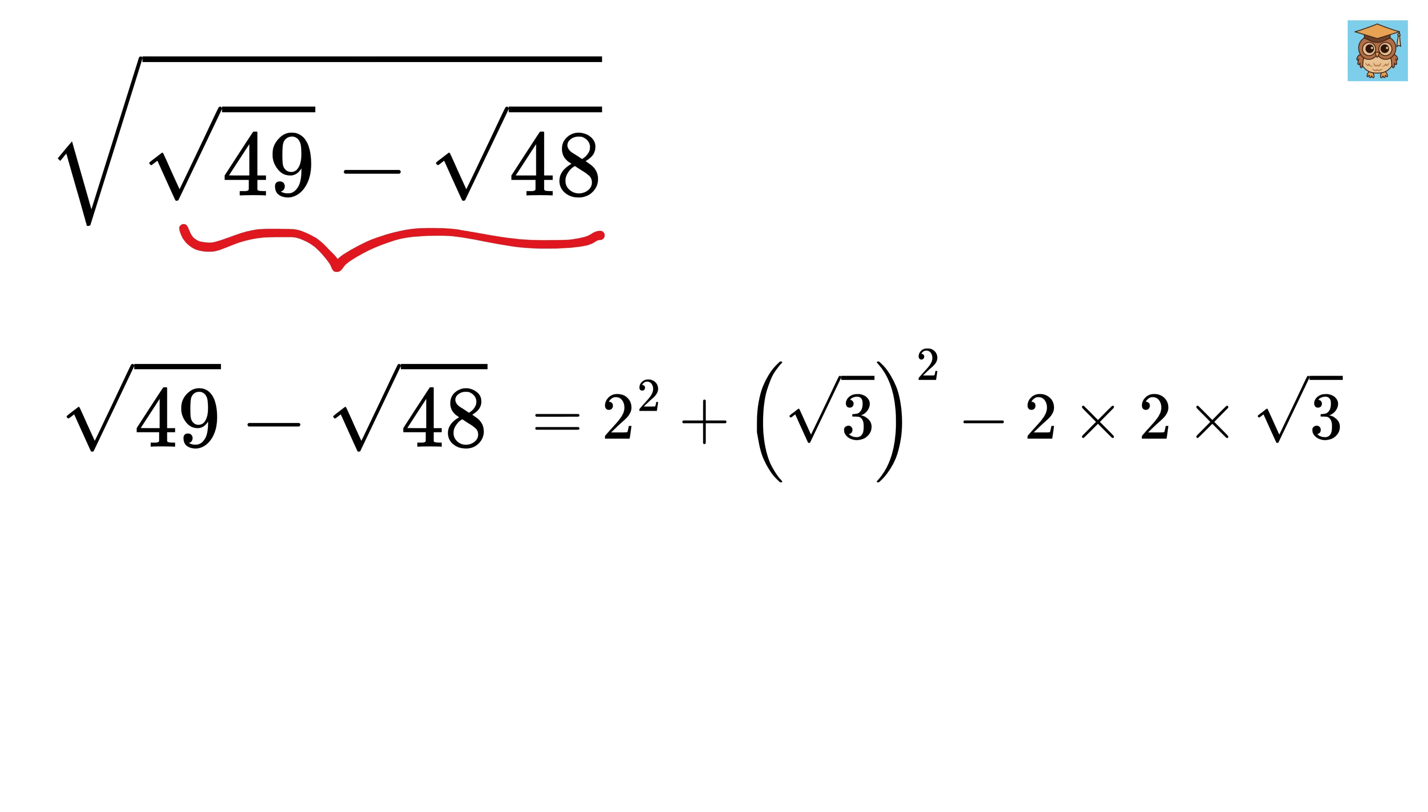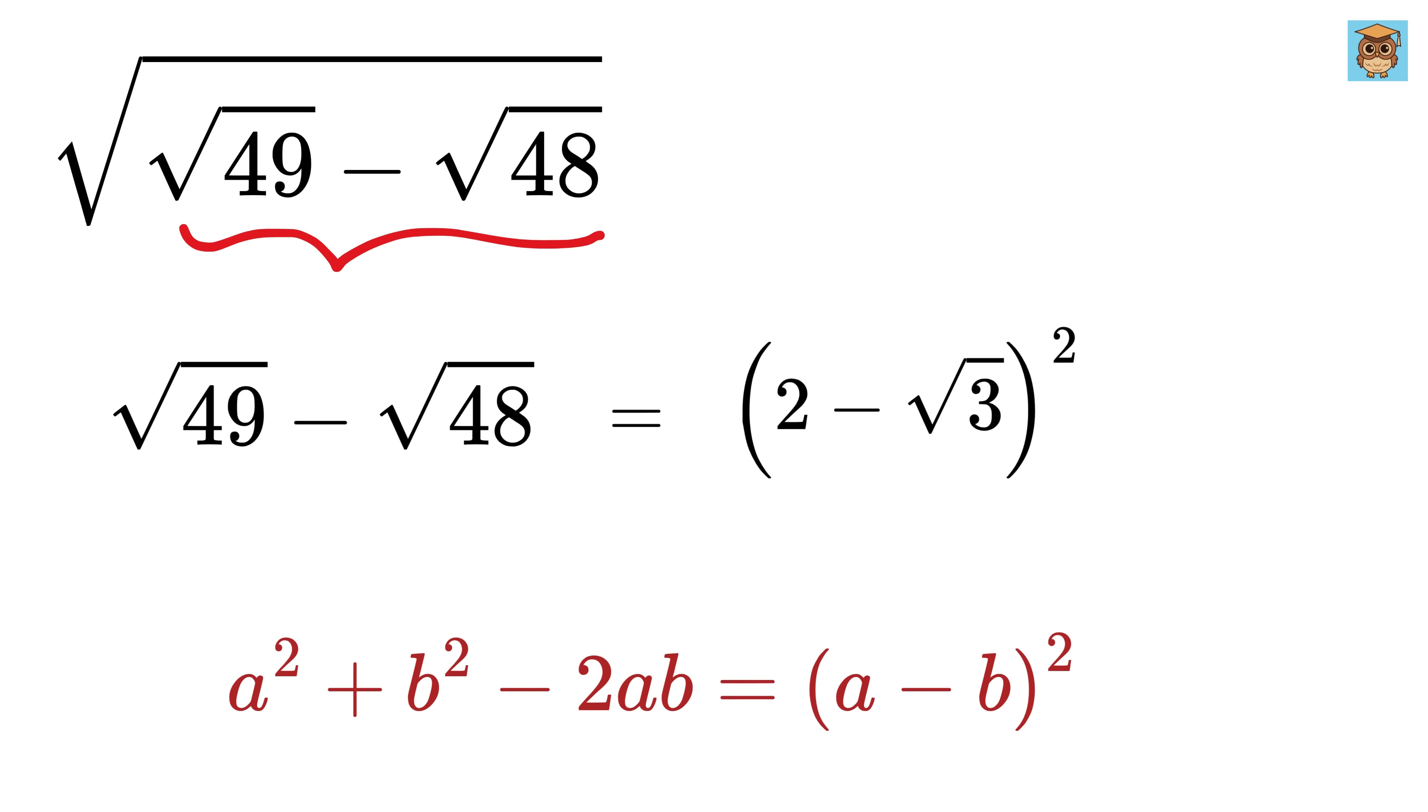Oh, can you notice something? Yeah, this is of the form A squared plus B squared minus 2AB, which is none other than A minus B whole square. So this will become the 2 minus square root of 3 whole square.